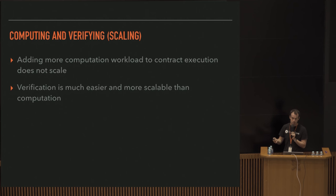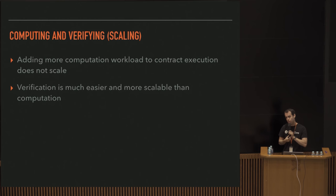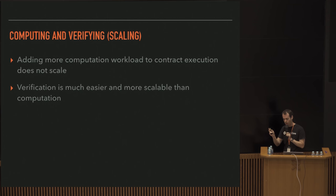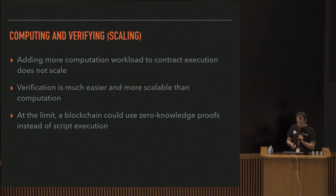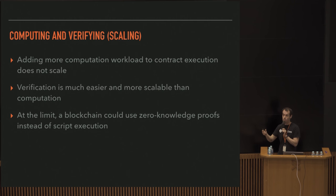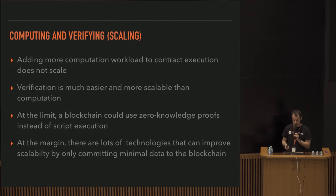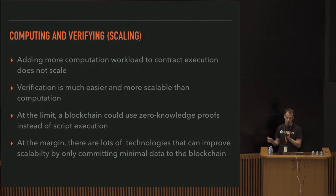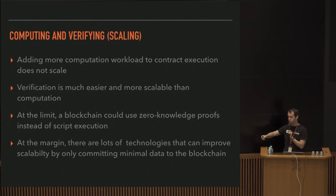Adding more computational workload to contract execution does not scale - it's a really bad way of scaling a blockchain. Verification is much easier and more scalable than computation, especially if we have things like aggregate signatures or batch validation for multiple signatures. If every contract is just some arbitrary program in a Turing-complete language, that makes for an unscalable blockchain. At the limit, a blockchain could use zero-knowledge proofs instead of script execution - we just need a proof, not the execution.